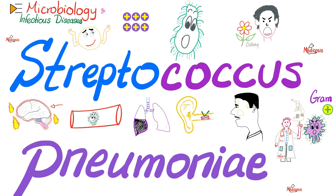Streptococcus pneumoniae normally colonizes the nasopharynx and the throat of many people, but it can also cause diseases such as meningitis, otitis media, pneumonia, and sinusitis. It can also cause bacteremia, and yes, it can damage your heart valves, whether your valves were healthy or not.